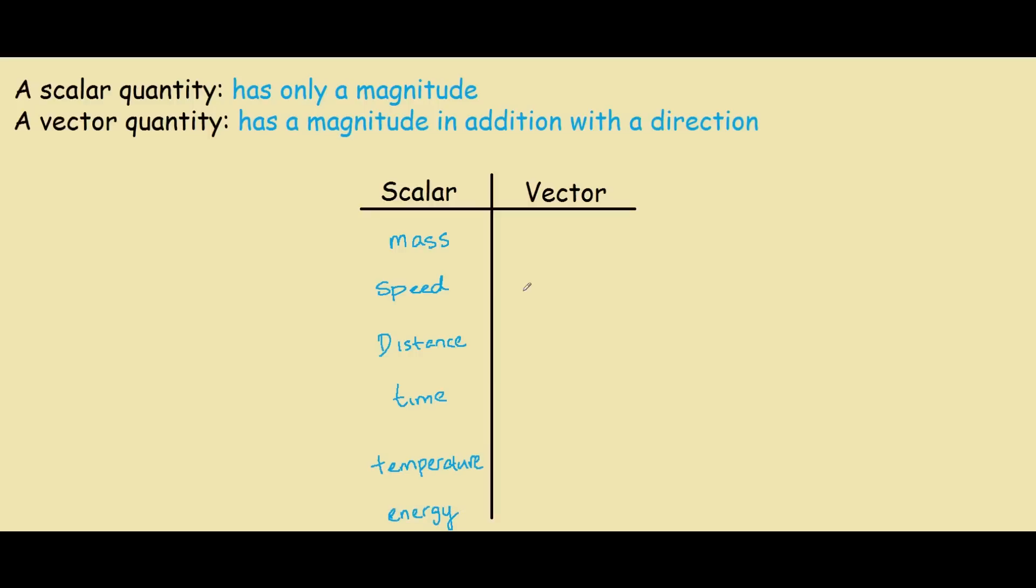As you can see, these quantities do not have a direction with them. So to make this example clear, let's look at speed. The vector quantity would be velocity.